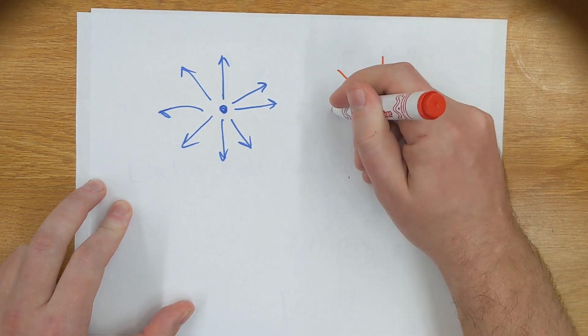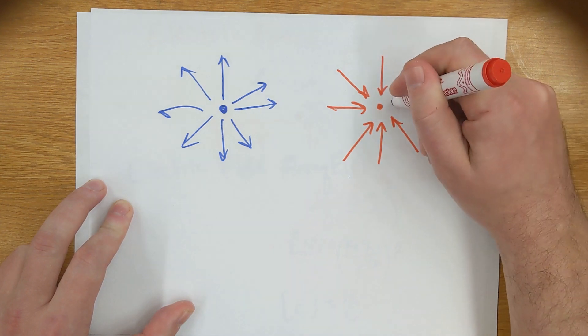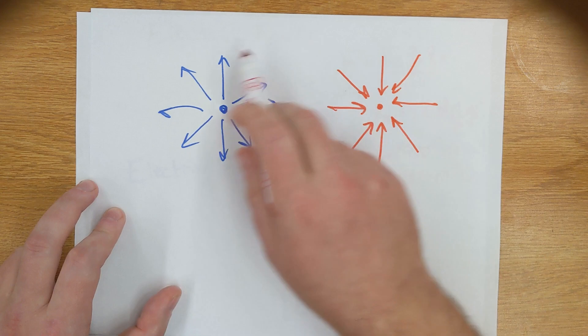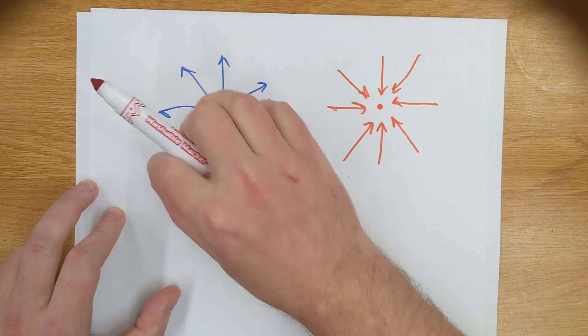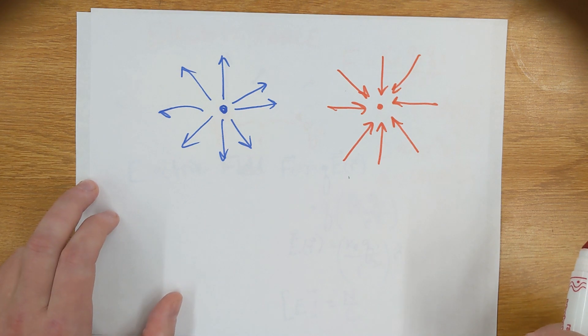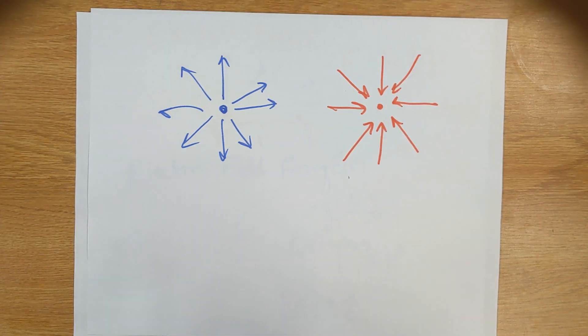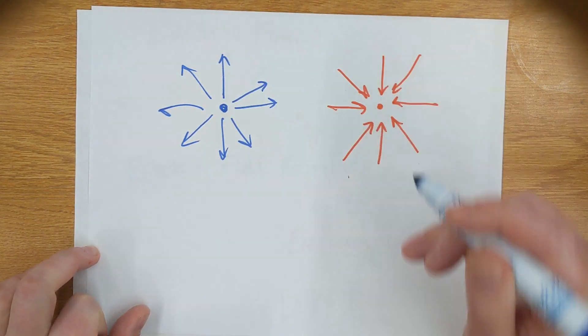And this electric field shows the direction the force would be on a positive, what we call a test charge, a charge that has very little influence on the system itself, but would move in a way that shows us the direction the electric field is going to go. So if I consider a positive charge here, it's going to be repelled from the positive charge and attracted toward the negative charge.